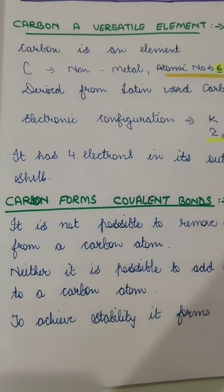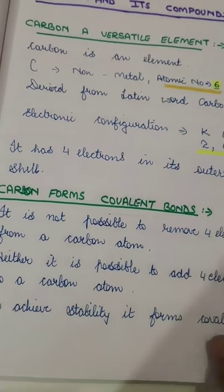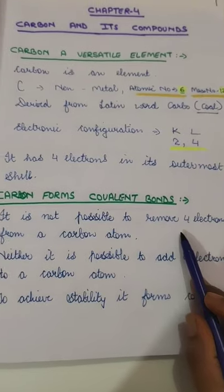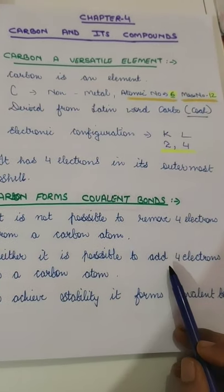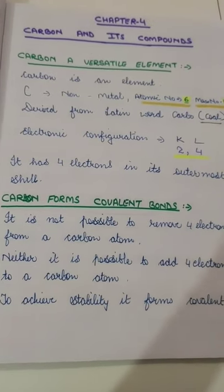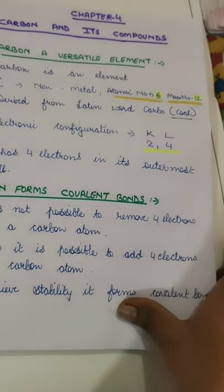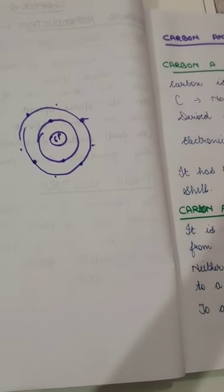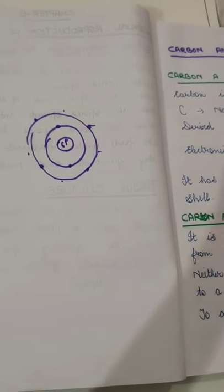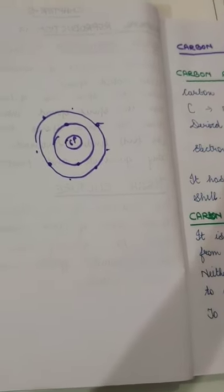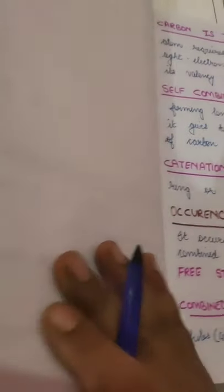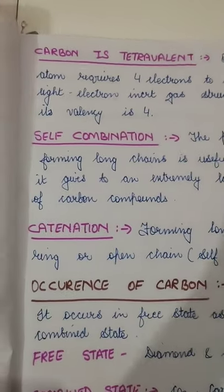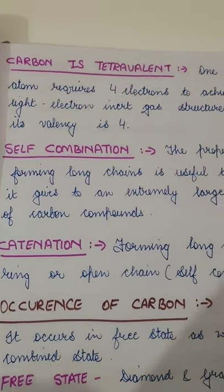Today is just an introductory topic of the chapter. Since it is not possible to remove four electrons from a carbon atom nor to add four electrons, to achieve stability carbon forms covalent bonds — it combines with other elements and shares its electrons. Other elements like hydrogen, oxygen, and many more also have the same property of sharing electrons.